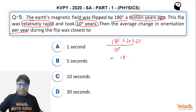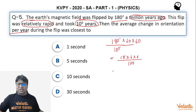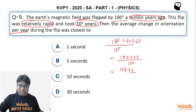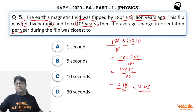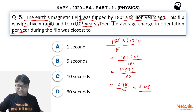This simplifies to 18 × 6 × 6 divided by 100. So 18 × 6 = 108, then 108 × 6 = 648, giving us 648 divided by 100, which equals 6.48 arc-seconds per year.